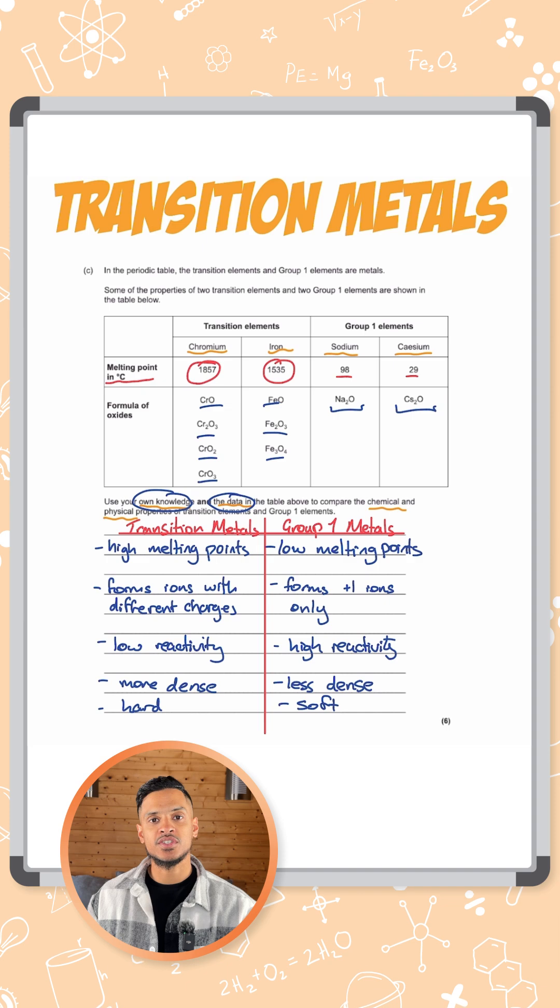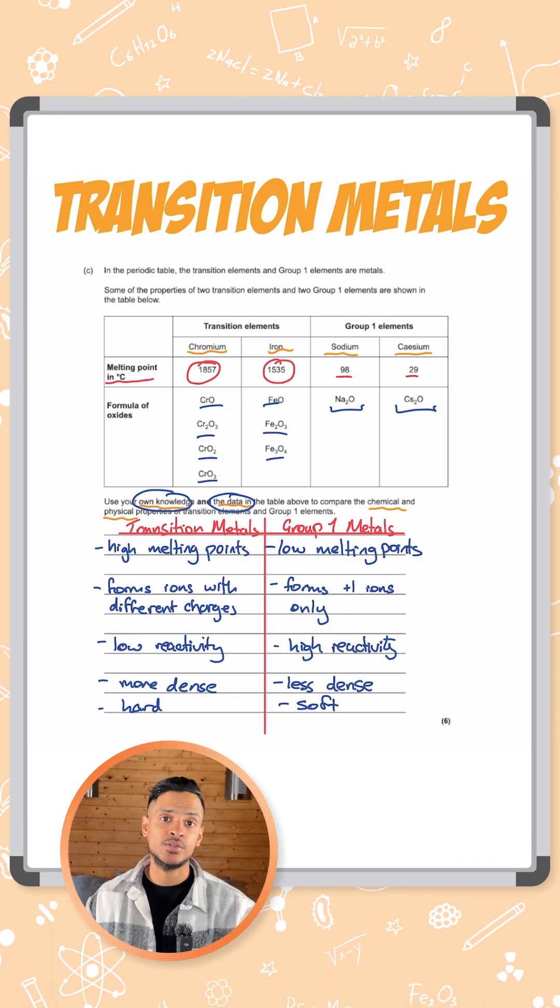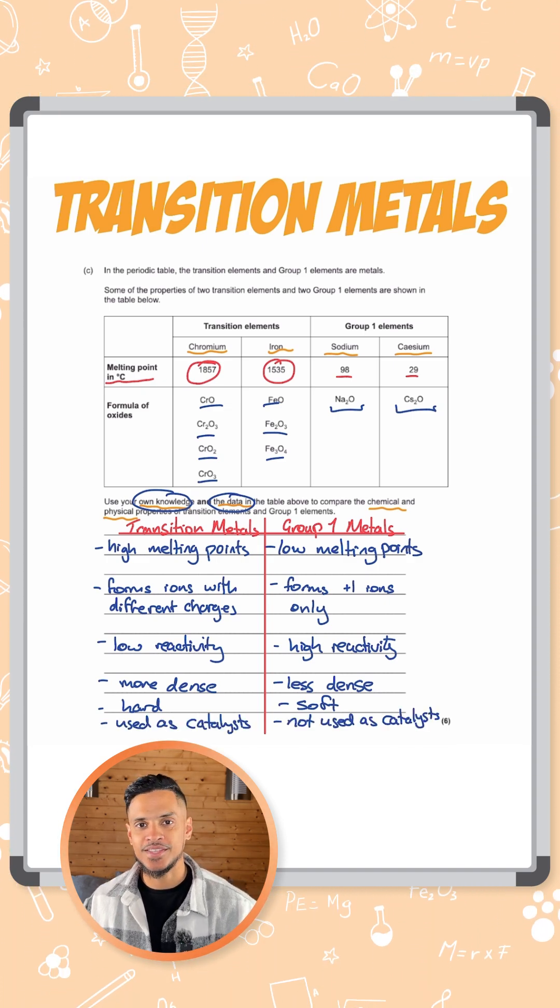So let's add one more here. We can just say that transition metals can be used as catalyst whereas alkaline metals cannot. And there we go. That's how you get six marks there.